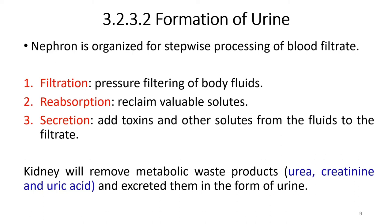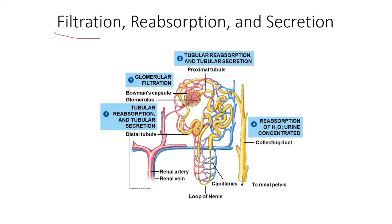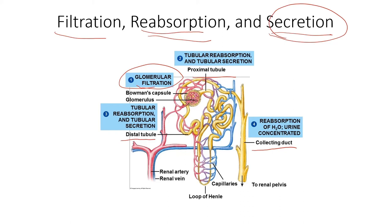Urine, the waste discharge of the urinary system, is produced by a combination of three processes. The first is filtration by the glomerulus. The second is tubular reabsorption. The third is tubular secretion. Filtration occurs at the glomerulus, reabsorption occurs in the proximal and distal tubules, and secretion also occurs in the proximal and distal tubules.